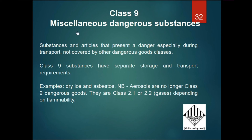Class 9 covers miscellaneous dangerous substances: substances and articles that present a danger especially during transport not covered by other dangerous goods classes. Class 9 substances have separate storage and transport requirements. Examples: dry ice and asbestos. Note: aerosols are no longer Class 9 dangerous goods because they are classified as Class 2.1 or 2.2 depending on their flammability.